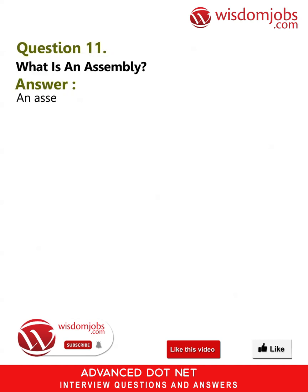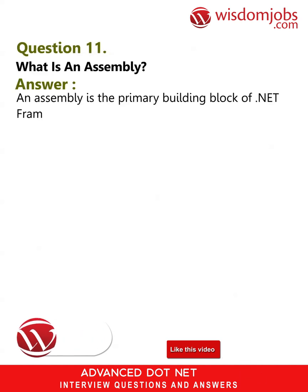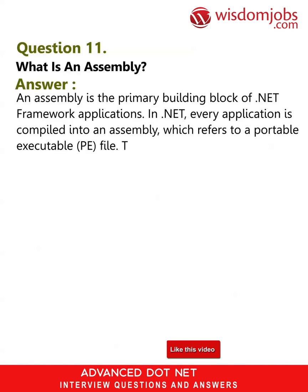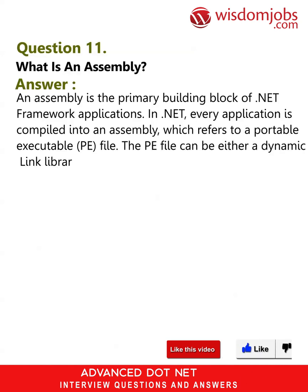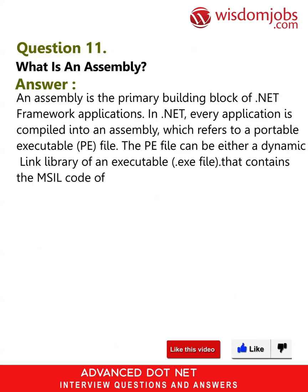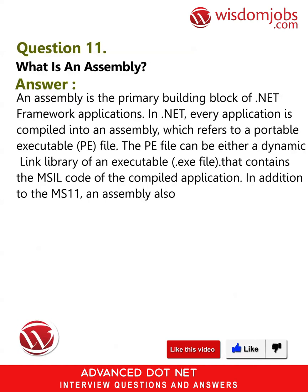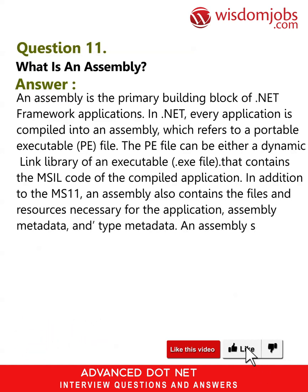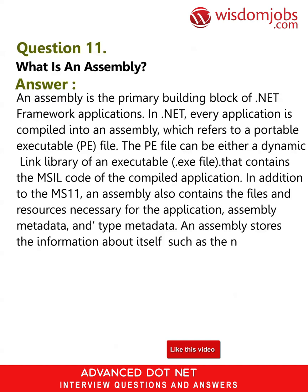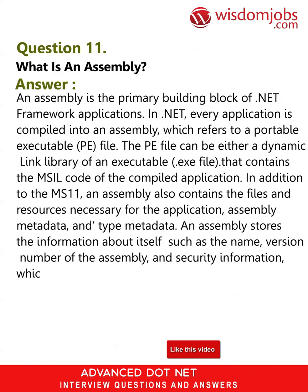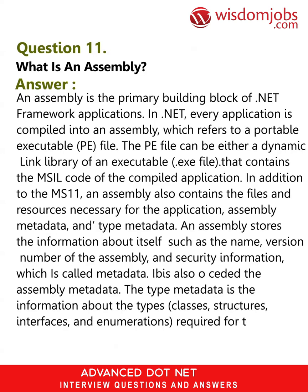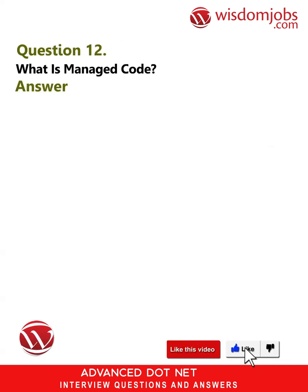Question 11: What is an assembly? Answer: An assembly is the primary building block of .NET Framework applications. In .NET, every application is compiled into an assembly, which refers to a Portable Executable (PE) file. The PE file can be either a dynamic link library or an executable .exe file that contains the compiled application code. In addition to the MSIL, an assembly also contains files and resources necessary for the application. Assembly metadata stores information about itself such as the name, version number, and security information. The type metadata includes information about the types, classes, structures, interfaces, and enumerations required for the assembly.